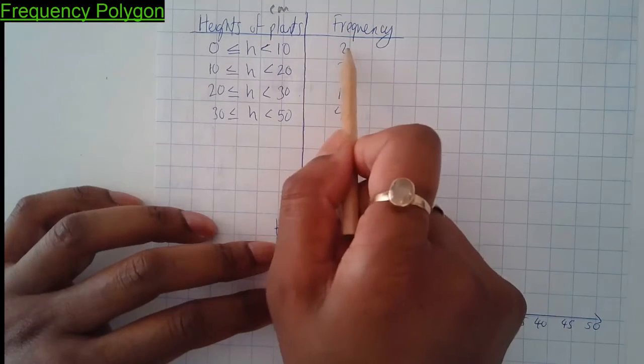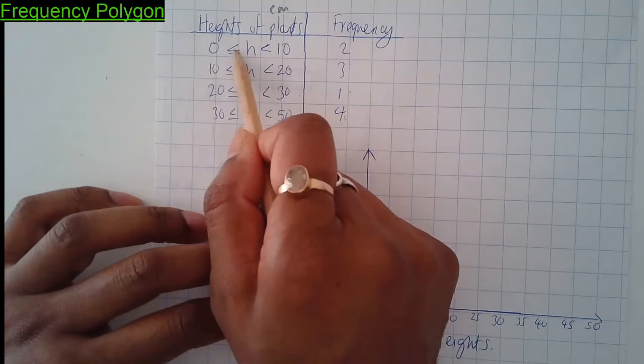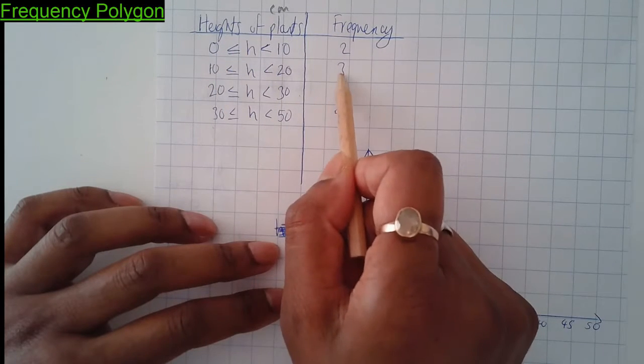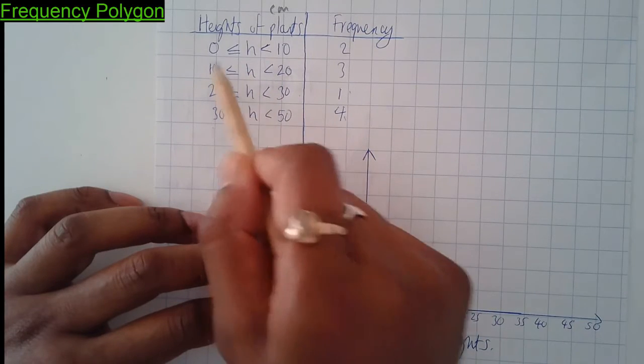Well to be more precise, two plants less than 10 centimeters but bigger than or equal to 0 centimeters, right? Three plants less than 20 centimeters but bigger than or equal to 10 centimeters. That's how it works.